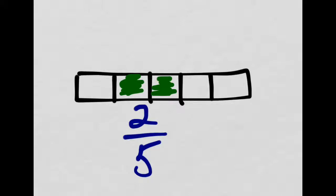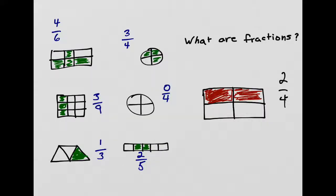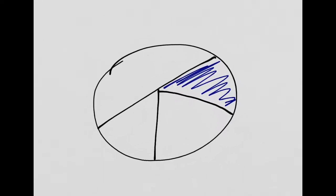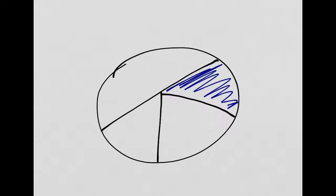Now let's take a look at something a little different. This one has a problem — see if you can identify what it is. I see one, two, three, four parts and one is shaded. So we might think this is one-fourth, but it's not. Here's the problem: the parts are not all the same size. If your parts aren't the same size, we can't call them a fraction.